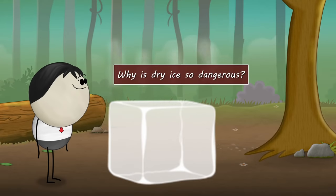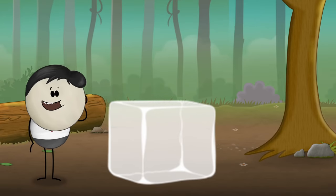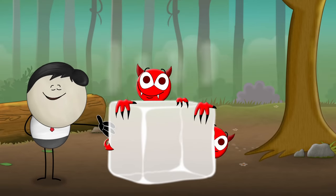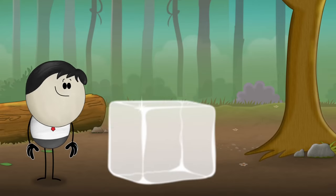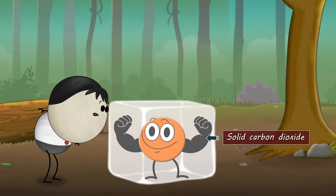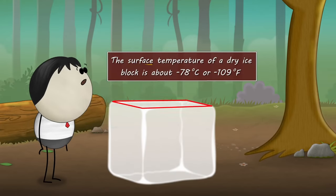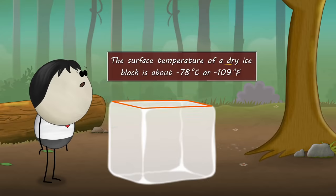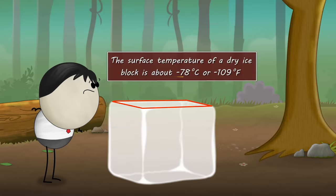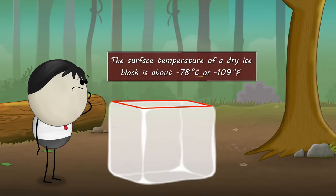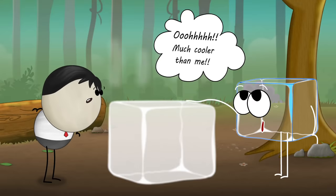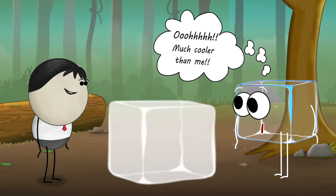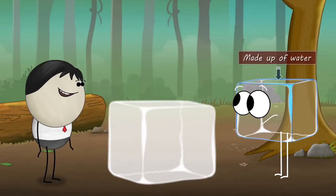Why is dry ice so dangerous? Maybe because it is made by devils. No. Dry ice is basically solid carbon dioxide. The surface temperature of a dry ice block is about negative 78 degrees Celsius or negative 109 degrees Fahrenheit. This means it is much cooler than ordinary ice, which is made up of water.